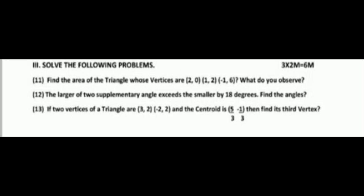If 2 vertices of a triangle are (3, 2) and (-2, 2) and the centroid is (5 by 3, -1 by 3), then find its third vertex. These are the section 3 questions.